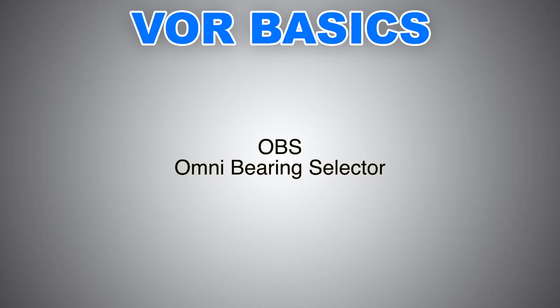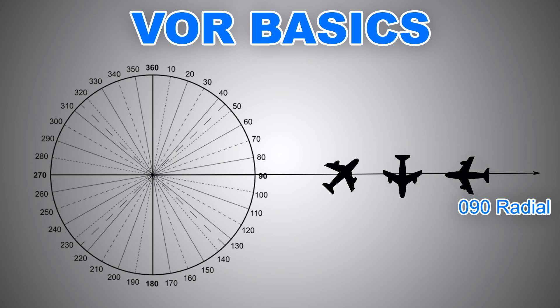Now that we have tuned and identified the correct station, we twist the OBS knob, where OBS stands for Omni Bearing Selector. It's the knob we twist to select which radial we would like to fly. I'd also like to clear up one misconception: the radial and the aircraft heading are not the same. You might be on radial 090 and facing north, south, southwest, etc.